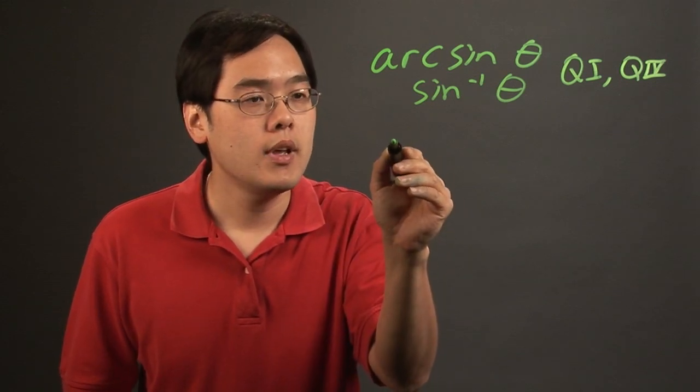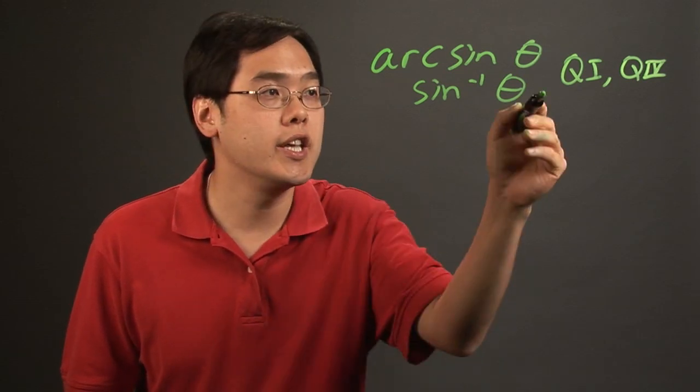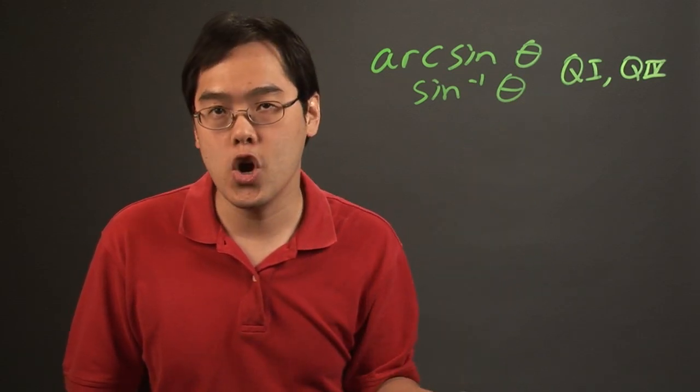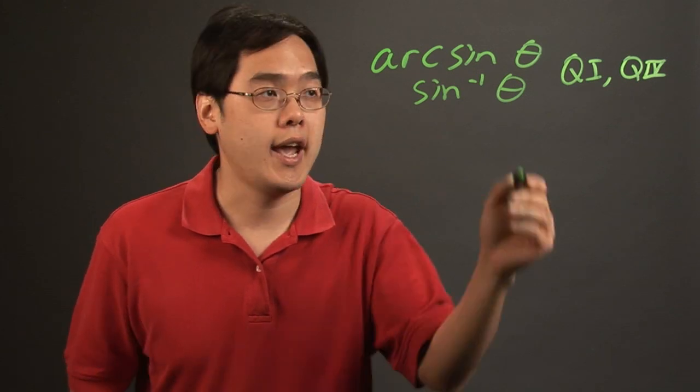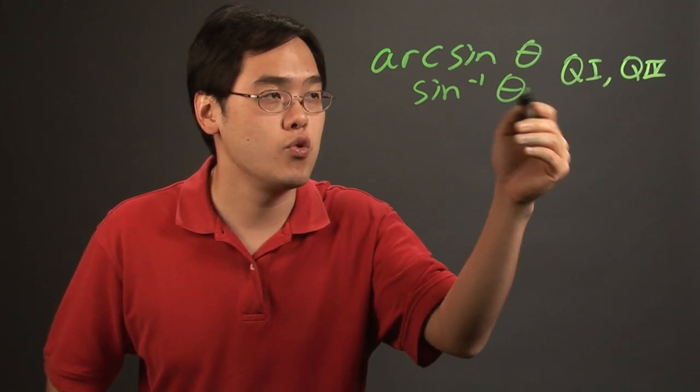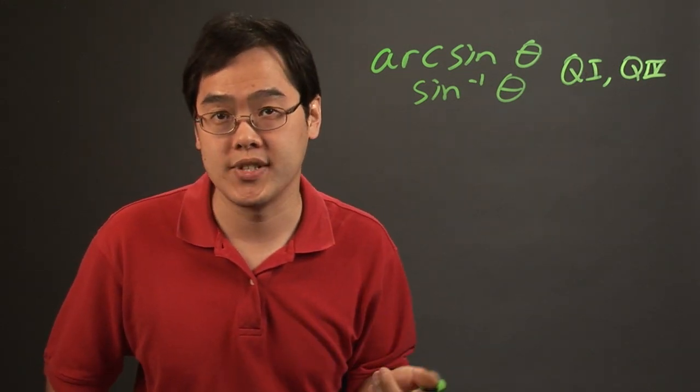So when you find the arc sine of an angle, a calculator is only going to give you the first angle that it knows, and so what you want to do is use reference angles to find out what the other angle is going to be. So it might give you a quadrant 1 angle and you might have to find the quadrant 4, or vice versa, depending on how you have it set up.